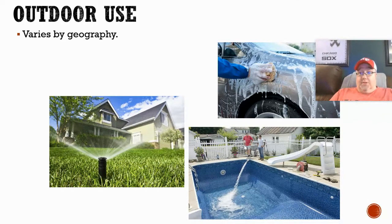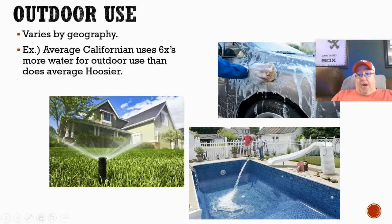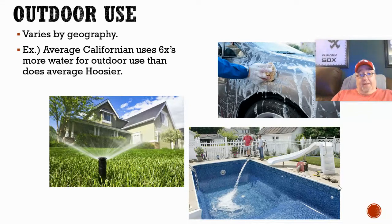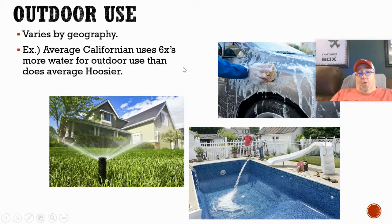Outdoor use is kind of a separate category, and geography impacts how much water you use outdoors. Someone in a sunny climate like California or Florida might use a lot more water than somebody in Indiana. In fact, there's a statistic here that says the average Californian uses six times more water for outdoor purposes than somebody else living in the US.